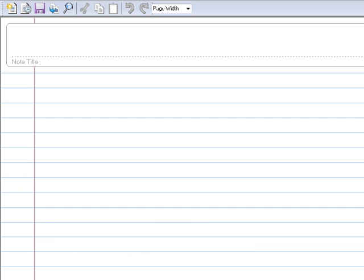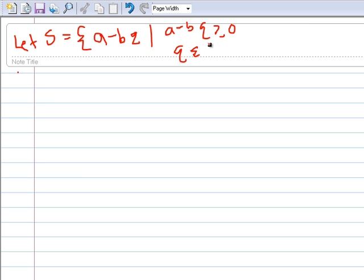So we introduce the set S. Let S equal the set such that A minus BQ where A minus BQ is greater than or equal to 0 and Q is an integer.